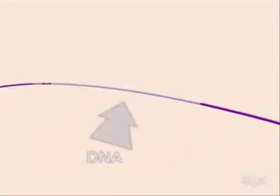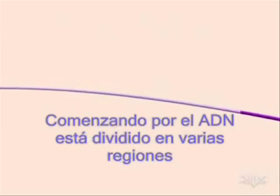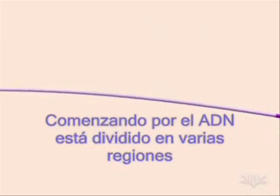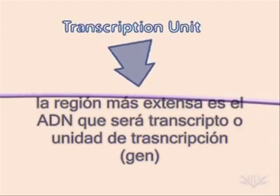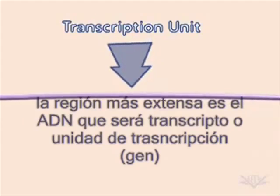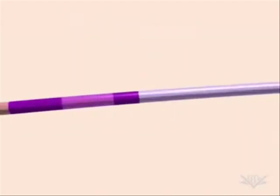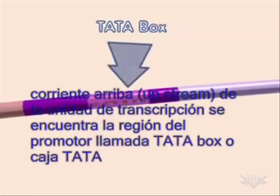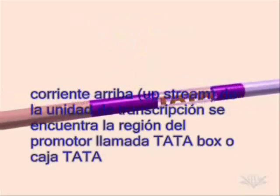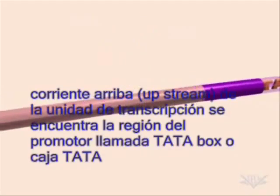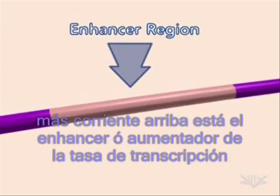Transcription begins with a strand of DNA, which is divided into several important regions. The largest of these is the transcription unit — the portion of DNA used to produce RNA. Upstream of the transcription unit is the TATA box. An enhancer region may also be involved.